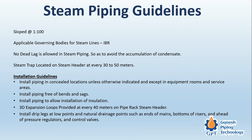Installation guidelines include: install piping in concealed locations unless otherwise indicated, except in equipment rooms and service areas. Install piping free of bends and sags — a sag creates a bow where condensate may accumulate. Install piping to allow installation of insulation with proper shoe supports. 3D expansion loops are provided at every 40 meters on pipe rack steam headers to absorb the majority of expansion and keep stresses within limits.